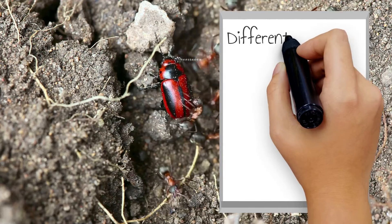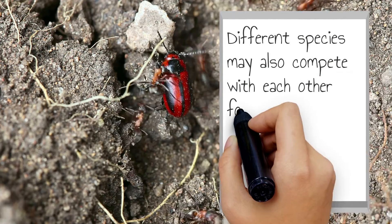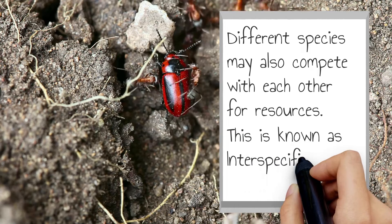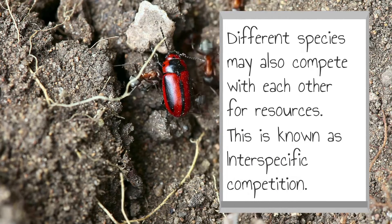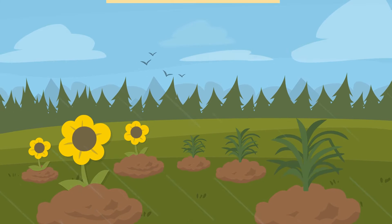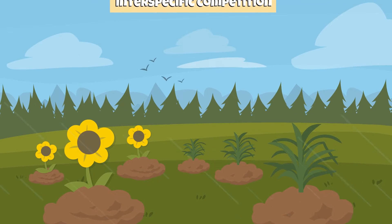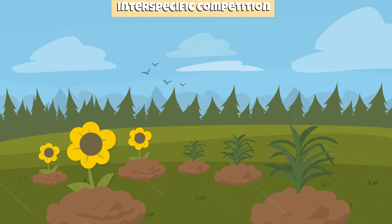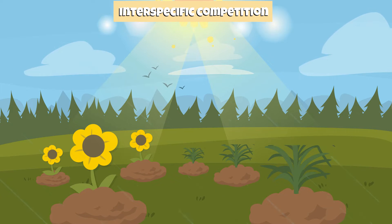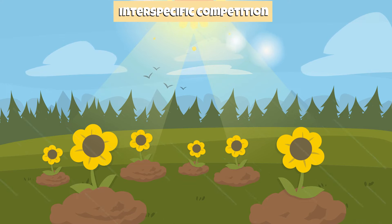Different species may also compete with each other for resources. This is known as interspecific competition. For example, two different species of plants may both occupy the same niche in an ecosystem and compete for resources, such as sunlight and water. The species of plant that has adapted better to its environment will out-compete the other.